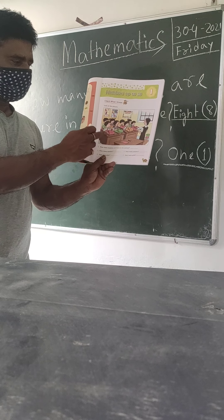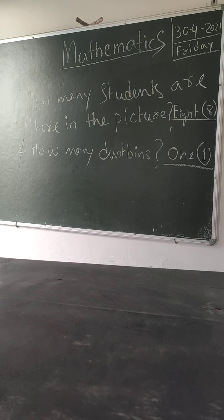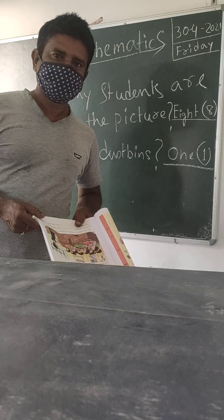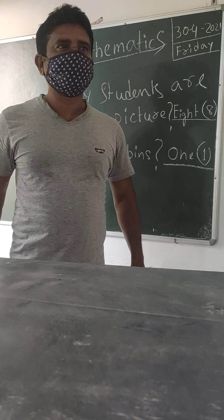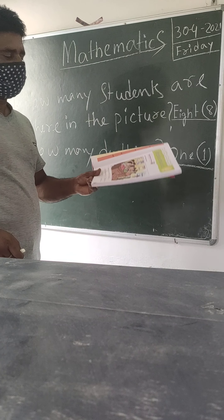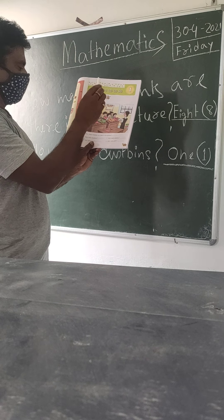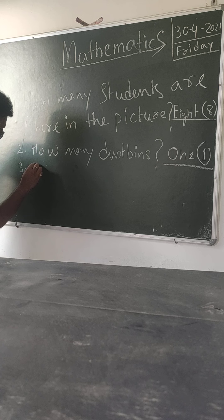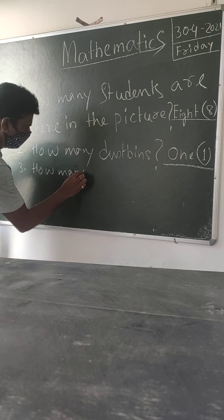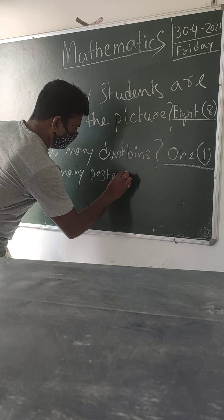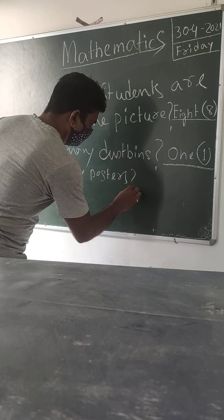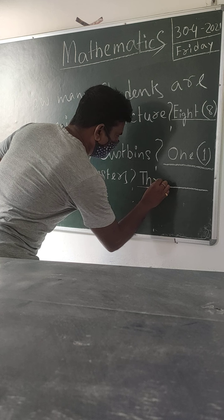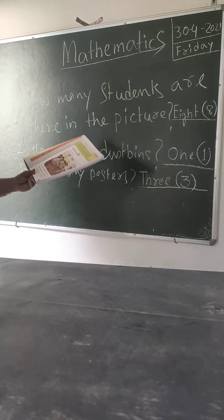The third question is: how many posters are there? Posters are pictures printed or drawn on paper and hung on a wall. Looking at the picture, there are one, two, three posters. So we write the answer as 'three', spelled T-H-R-E-E, and write three in the bracket.